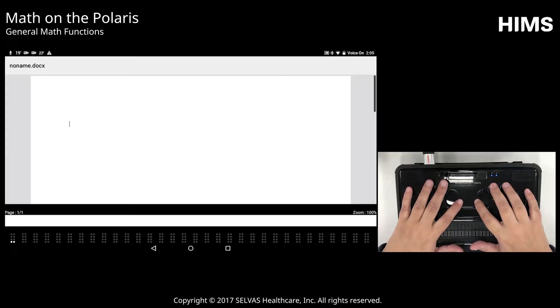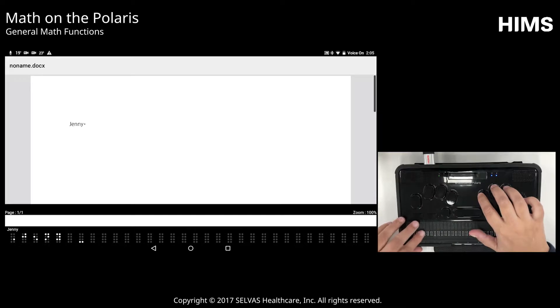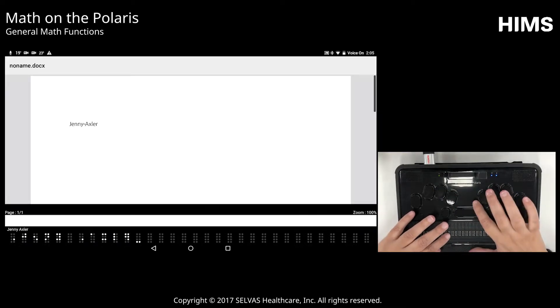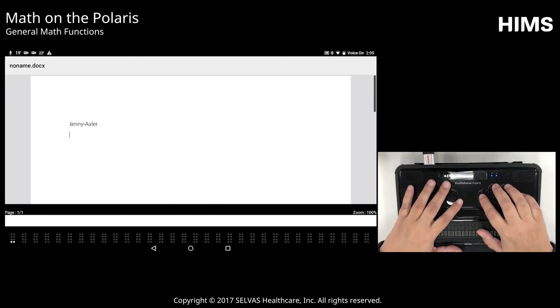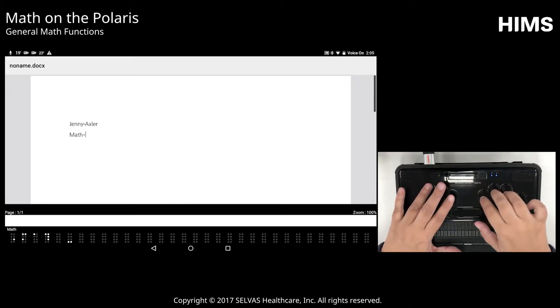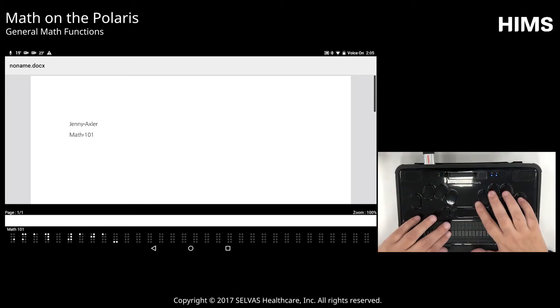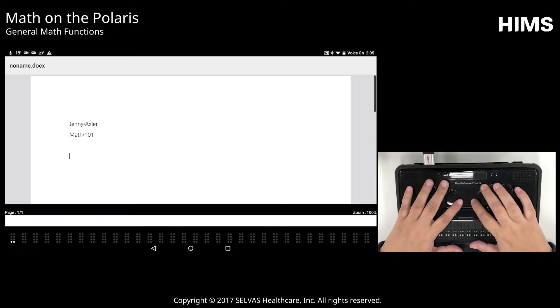I'll start it out just as I might if I was writing an assignment. So I'll just type my name, and I'll type maybe the class name. So we'll just do Math 101. And now I'm ready to type math. To enter and exit math mode, you use backspace m. So I'll type that now. And it says, starting Nimeth mode. If I was using UEB, of course, it would say start UEB mode. So now I'm ready to type.